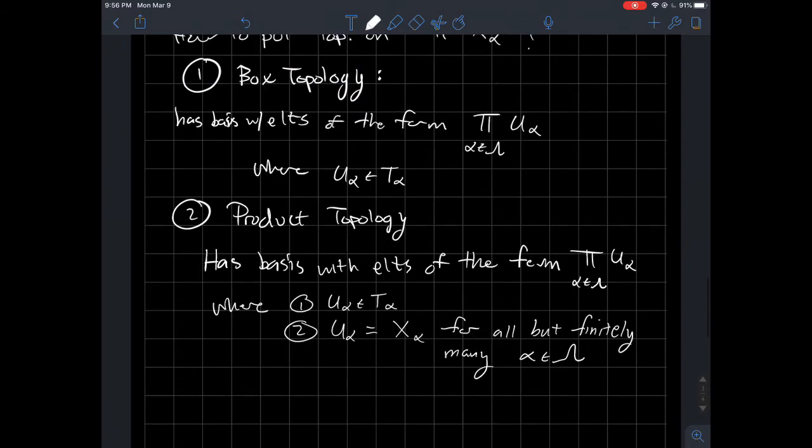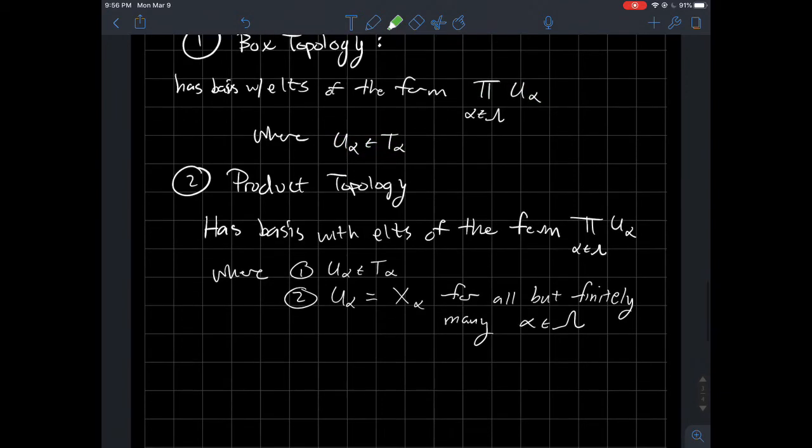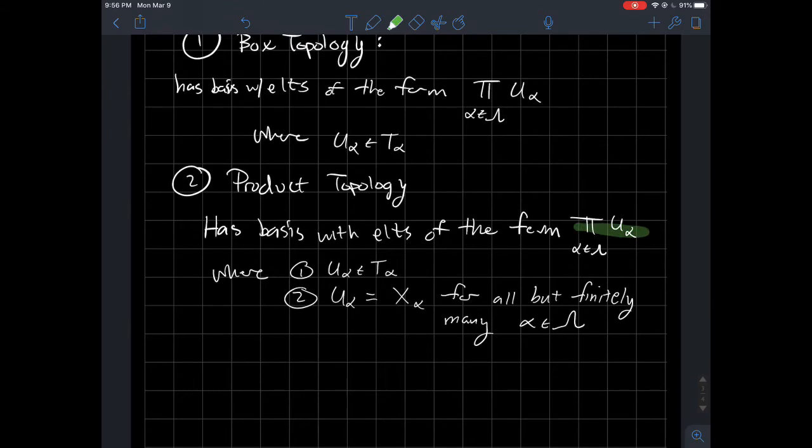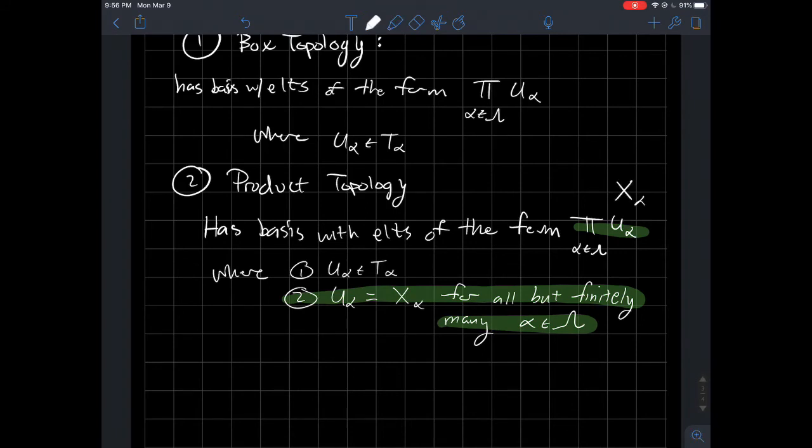This is the difference between the two. There are no restrictions on the box topology. There are no restrictions on the components that I can take in this product. For the product topology, there's a pretty big restriction on the components. Eventually each of these u's is just the entire space that it came from. Let me give you an example.